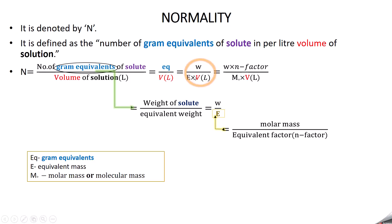Replacing equivalent weight with molar mass divided by N factor, you get: normality equals weight of solute times N factor, divided by M₀ times volume in liters. Since you replace E by M₀/N factor, the N factor moves to the numerator.